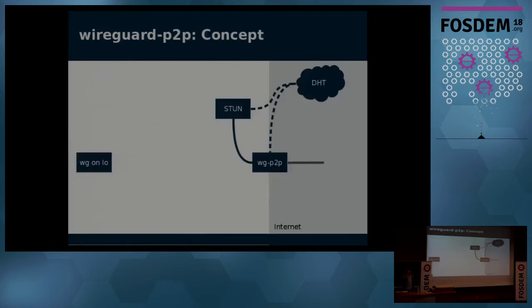WireGuard peer-to-peer sits in between WireGuard and the internet. What it does is use the STUN protocol to ask a server what your external IP address is. Then it encrypts that external IP using Libsodium and publishes it in the DHT. It also queries all the other peers for their external IP addresses.